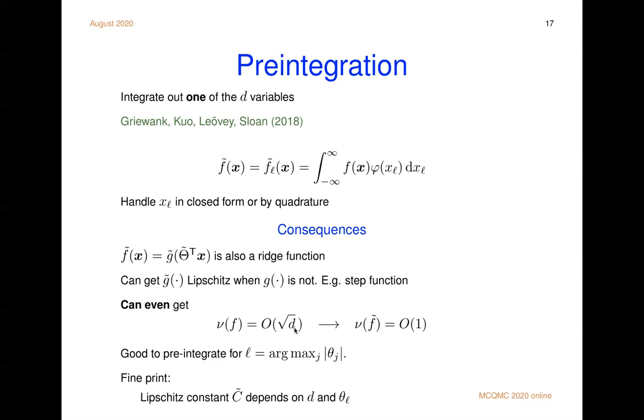We're used to telling people that Fubini doesn't really work well in high dimensions. You can't like integrate your integrals and expect things to be better. But here actually it is true. If you integrate one thing in closed form, and then use quasi Monte Carlo on the rest, you can get a big improvement. If you want to do this pre-integration, don't pick theta_l equals zero. That doesn't do anything. You want to pick one if you can that has a big theta. And if that theta is bounded away from zero as d goes to infinity, then you can get something like this phenomenon happening.